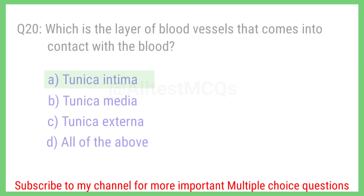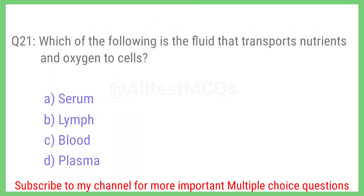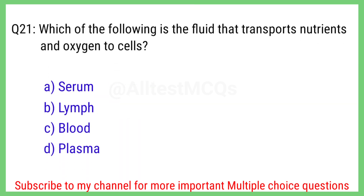Question number 21. Which of the following is the blood that transports nutrients and oxygen to cells? The right answer is option C. Blood.